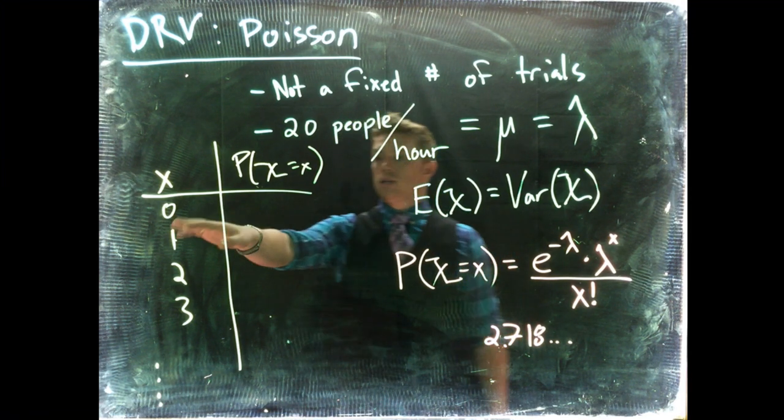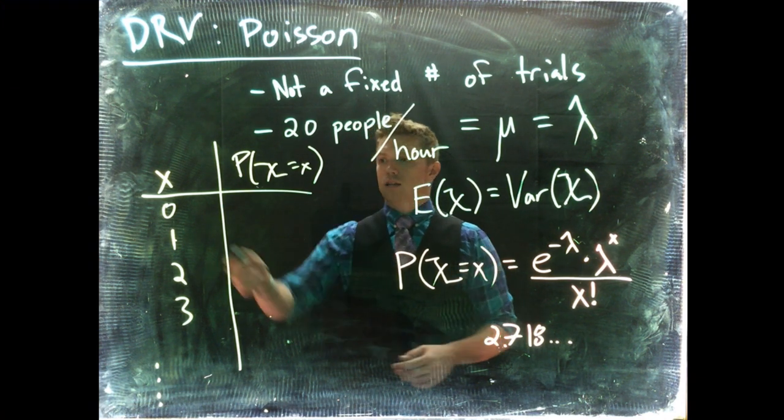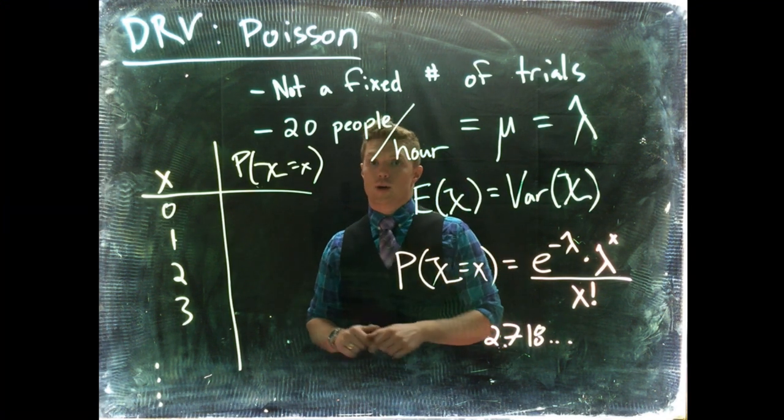Is there a probability that nobody comes to the coffee shop this hour? Yeah, it's pretty small, and then we can go 1, 2, 3, all the way to 20. We could ask what's the probability that 60 people are going to show up. Small, but the probability does exist.